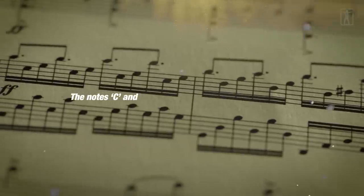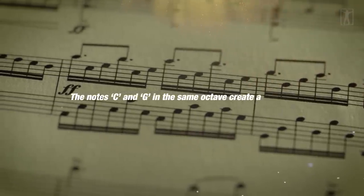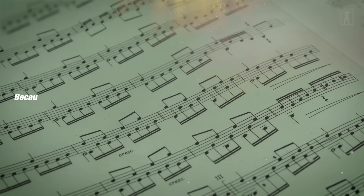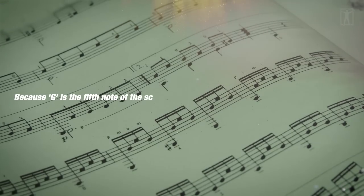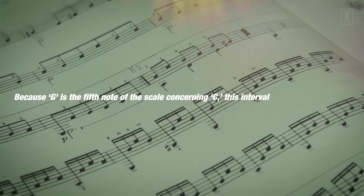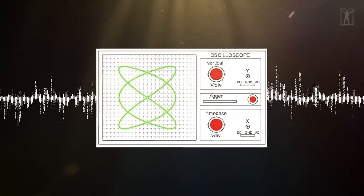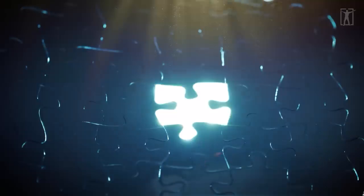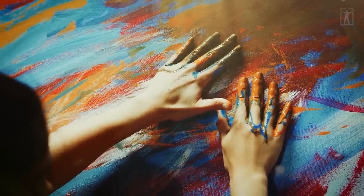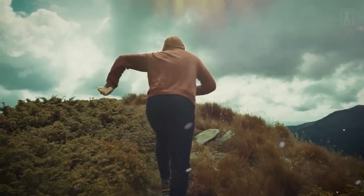The notes C and G in the same octave create a three-to-two ratio. Because G is the fifth note of the scale concerning C, this interval is known as the fifth. The fifth interval has a three-to-two ratio that conveys a sense of completion and creativity, and increases power and movement.